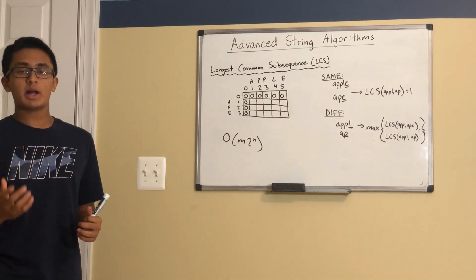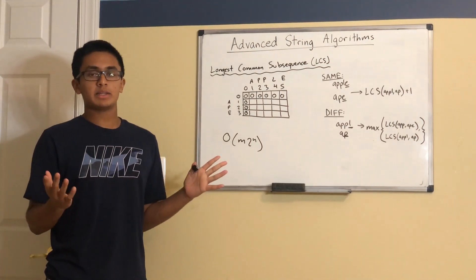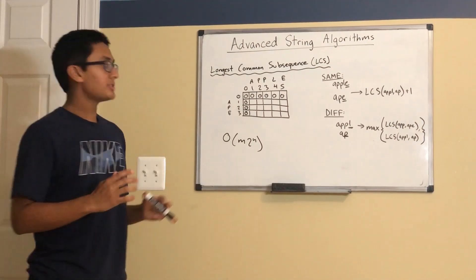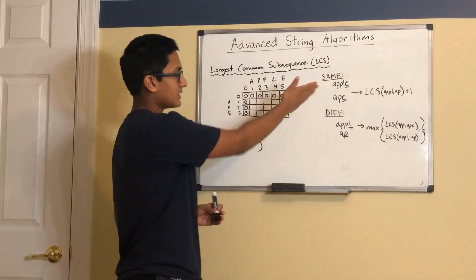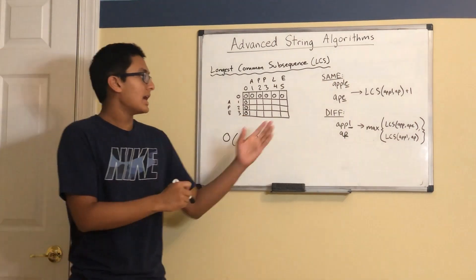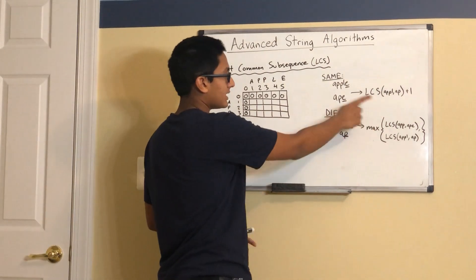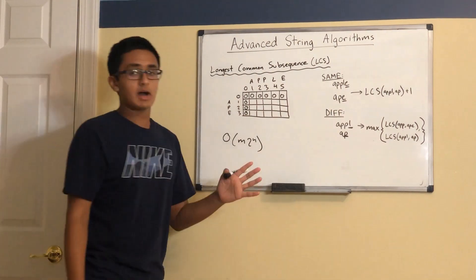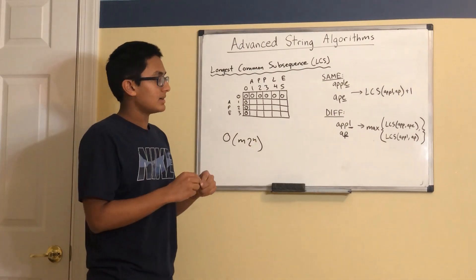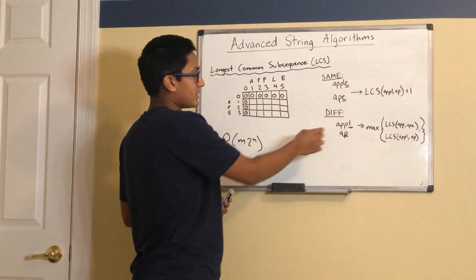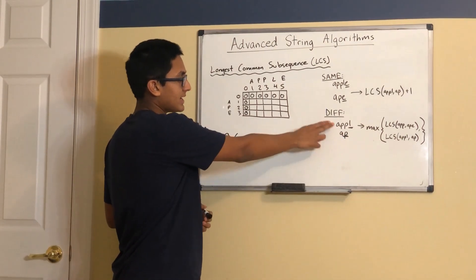However, we notice that there is a lot of overlap in subproblems and we can apply dynamic programming. There are two cases to consider. When we have two given strings, either the last two characters of the two strings are the same or they are different. If the characters are the same, then the length of the longest common subsequence is simply the length of the longest common subsequence without the common last letter, plus 1. And if they are different, then the result is the maximum of either the first string with the last character removed paired with the second string, or the second string with the last character removed paired with the first string.